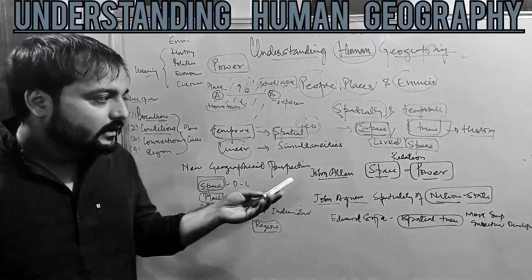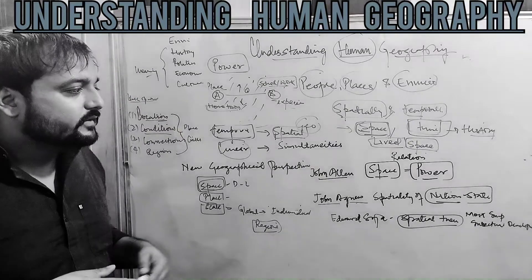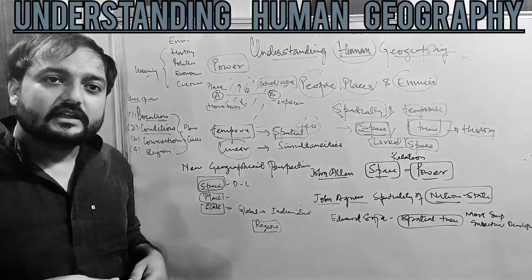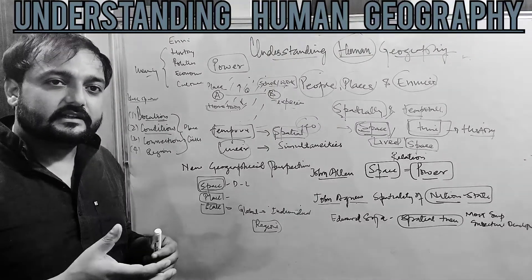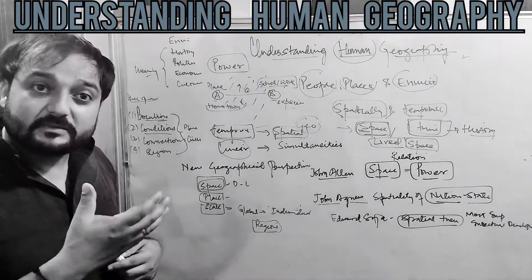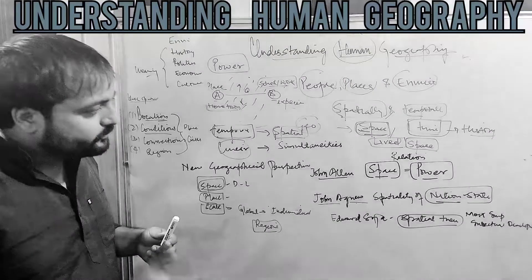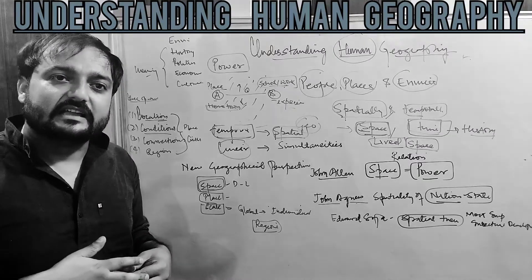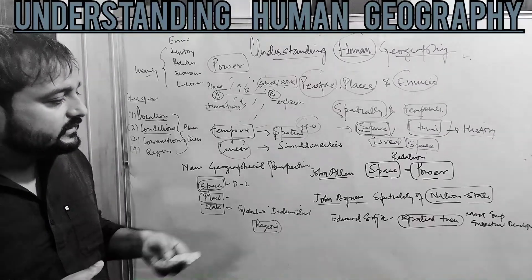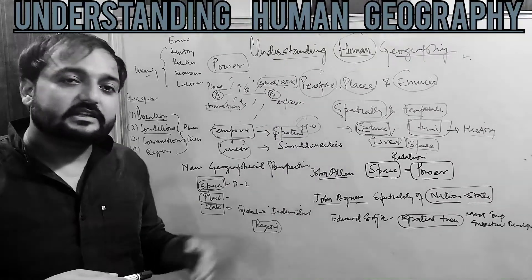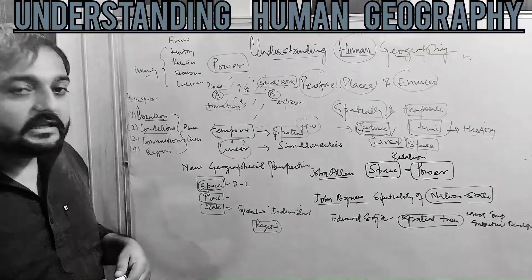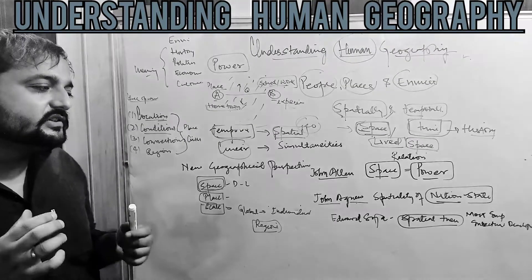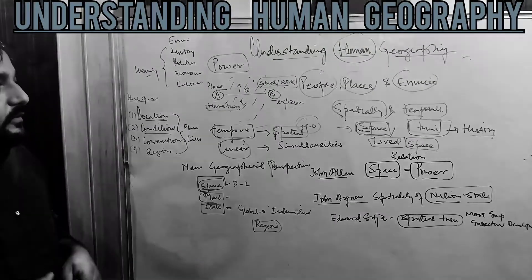Some famous geographers who have worked on space include John Allen, who worked on the relationship between space and power. This space has been created by the powerful ones — it has been invented — and few people are taking advantage of it while most people are being marginalized. Similarly, John Agnew also gave the concept of the spatiality of the nation-state. Edward Soja gave the concept of the spatial turn in the 1990s, which became the most influential and intellectual development in terms of geography.